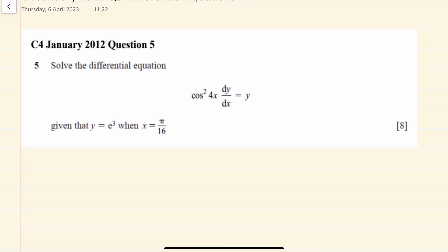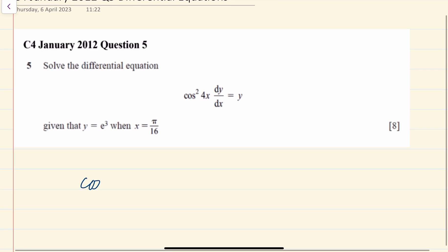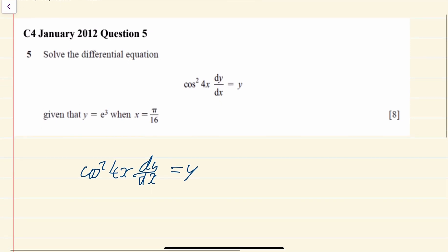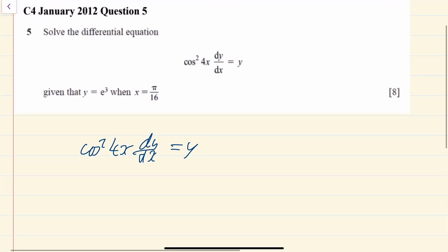What we've got to do is separate the variables. So let me just write down this question again. We've got cos squared 4x dy/dx equals y. Now the way I like to think of it is you want to get a function of y times dy equal to a function of x times dx.